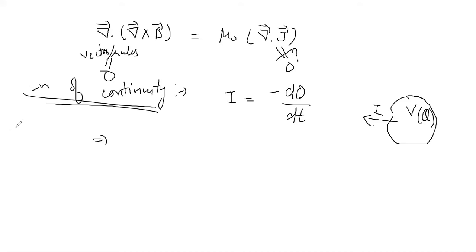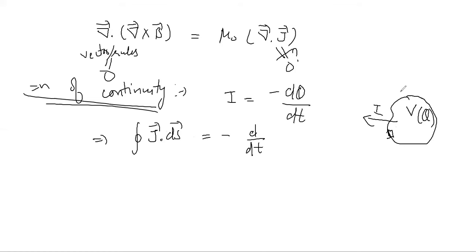We defined current density J as current per unit area, so I can write the current as the integral of J dot dS over the surface bounding volume V. The other side is minus d/dt of the integral of the charge density rho over the volume element d-tau, where d-tau represents a small volume element.